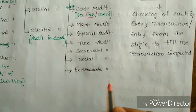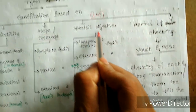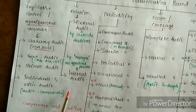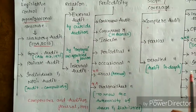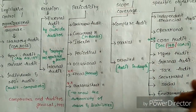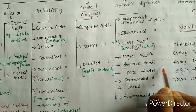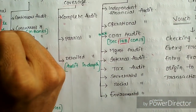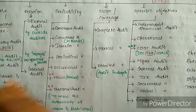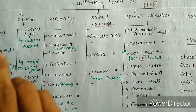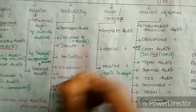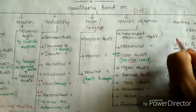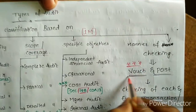We will discuss Section 148 in detail in further classes. Other types based on specific objectives include management audit, internal audit, tax audit, secretarial audit, social audit, and environment audit. Internal audit appears under both — based on specific objectives (for internal control) and based on relation (for internal users). Based on that, internal audit is classified in both ways.